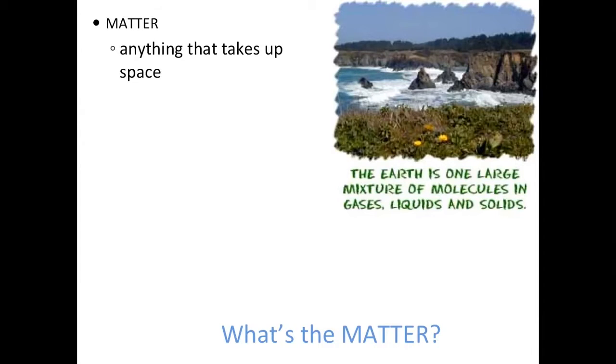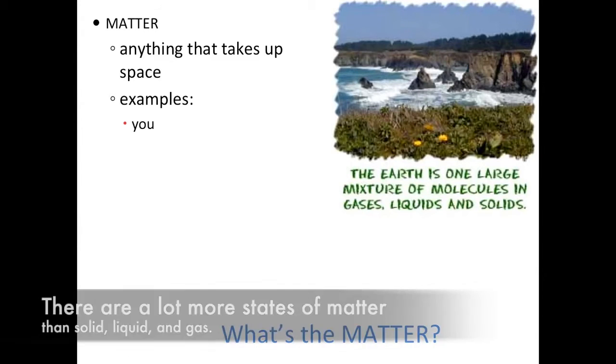What matter is, is basically just anything that takes up space. By definition, that's what it is. Earth is one large mixture of molecules in gases, liquids, and solids. Gases, liquids, and solids are the forms of matter that you can have. There are other ones as well, but for this class we're mostly going to be focusing on those three.